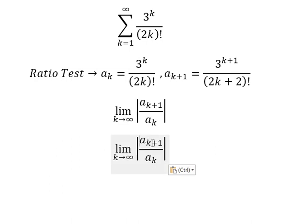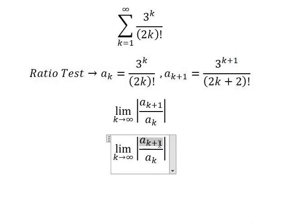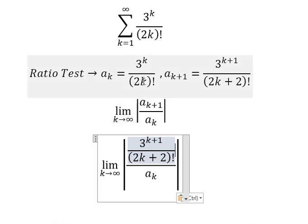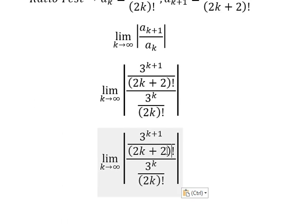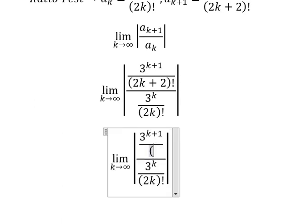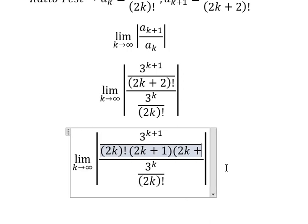And now we have the absolute value of a_{k+1} over a_k. So this one is about this one, and a_k is about this one.